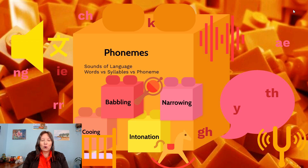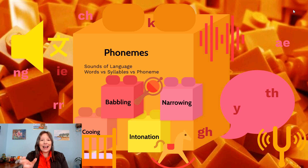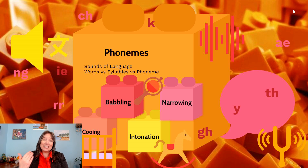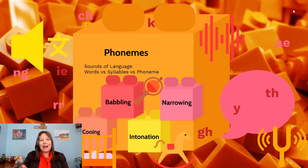Take the word 'cat': it's one word and one syllable, but it has three distinct phonemes — kuh-a-tuh. Similarly, 'catnip' has two syllables, and even 'nip' on its own is one syllable with three separate phonemes: n-i-puh.